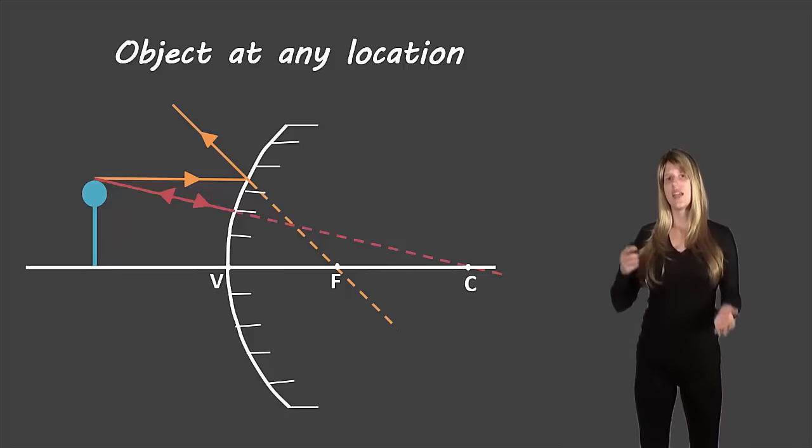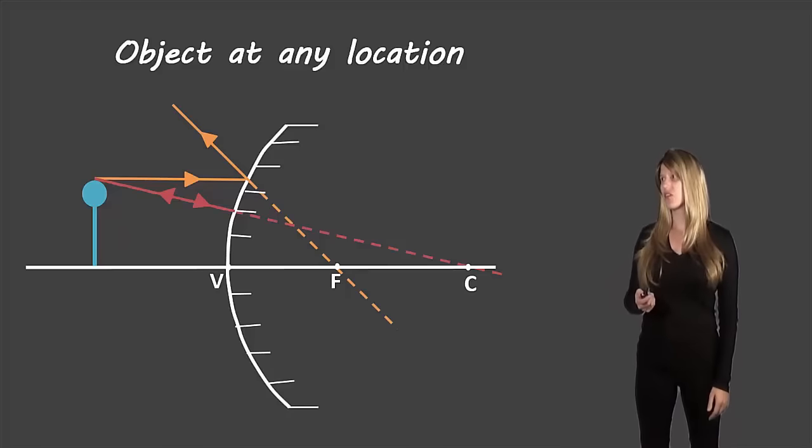And again the light is not actually coming through to C because the light cannot travel through the mirror so we draw our dashed lines to indicate that the light is not traveling through the mirror but that it looks as if it came from the center of curvature.